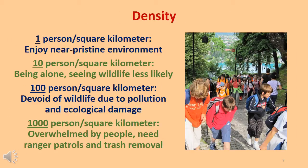Density shows how carrying capacity affects visitor enjoyment of the natural environment. With a density of 1 person per square kilometer, a visitor will enjoy a near pristine environment. At 10 persons per square kilometer, a visitor is less likely to be alone or see wildlife. At 100 persons per square kilometer, the area will be devoid of most wildlife and suffer from pollution and ecological damage. At 1,000 persons per square kilometer, the natural environment becomes overwhelmed by people and takes on the characteristics of a city, with the need for ranger patrols and trash removal services.